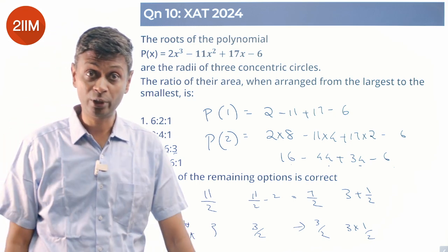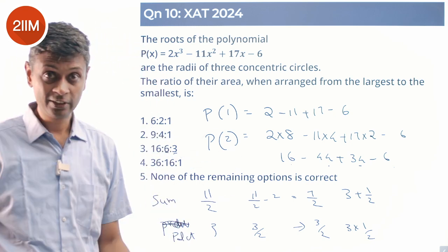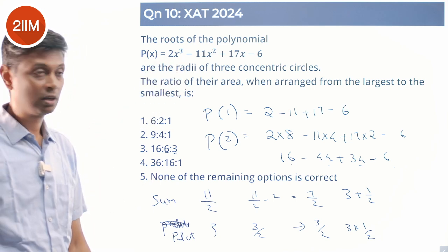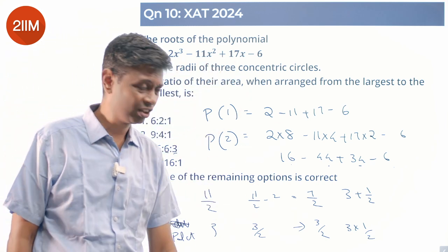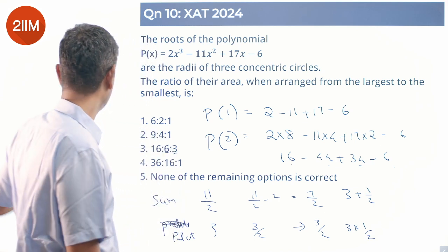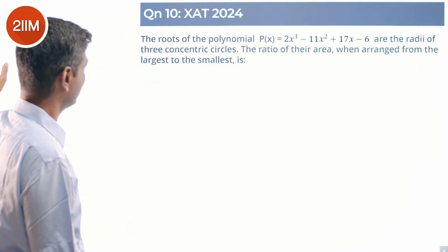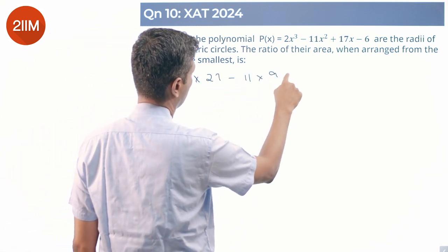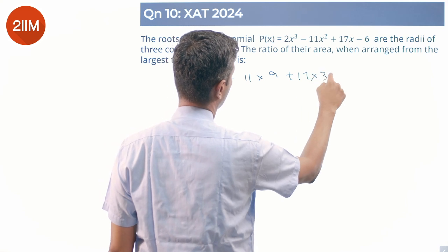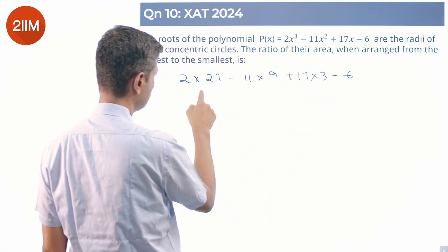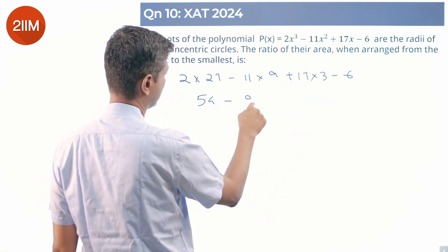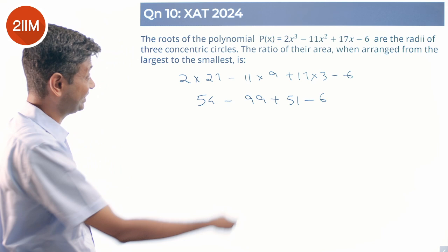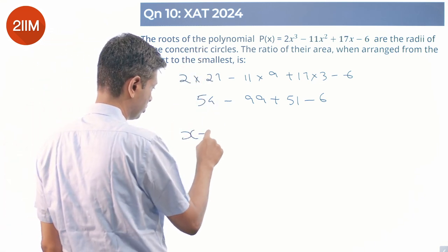So 3 is a root, 1/2 is a root. I can substitute and verify. I'll substitute 3 - if 3 works, I'll take it for granted that 1/2 will work. 2×27 - 11×9 + 17×3 - 6 = 54 - 99 + 51 - 6 = 0. Yeah, 105 - 105. 3 works. This expression is (x - 2)(x - 3)(x - 1/2).